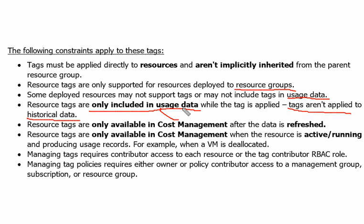Resource tags are only available in cost management after the data is refreshed. It may take 8 to 24 hours to become available. Resource tags are only available in cost management when the resource is active and running — if a virtual machine is turned off, that tag won't be reflected. If any resource where the tag is applied is not producing any usage record, it's not going to be visible in cost management.